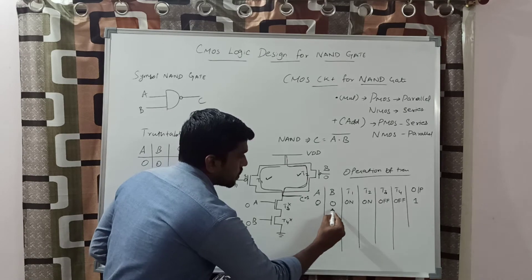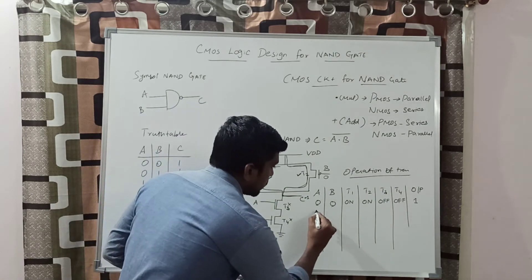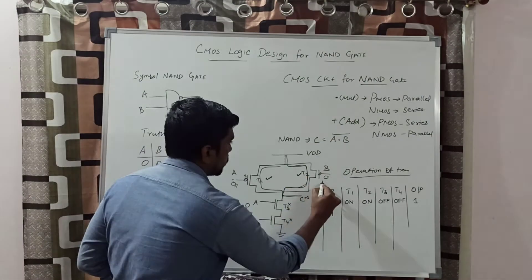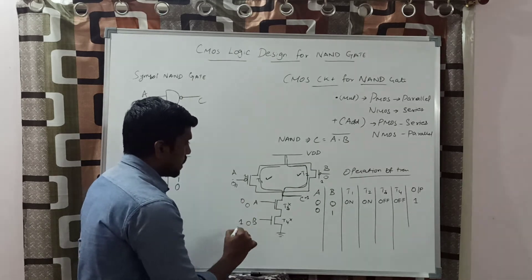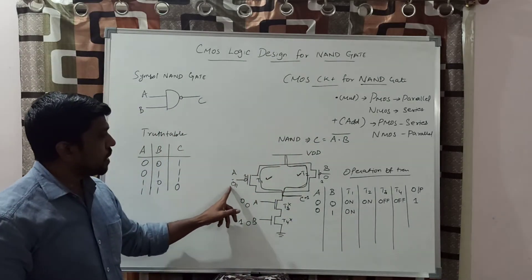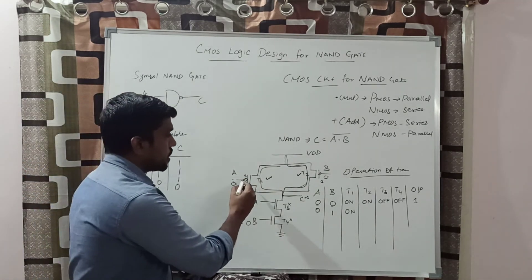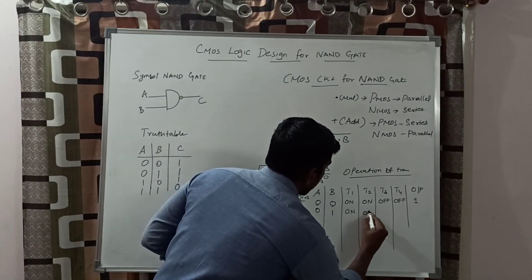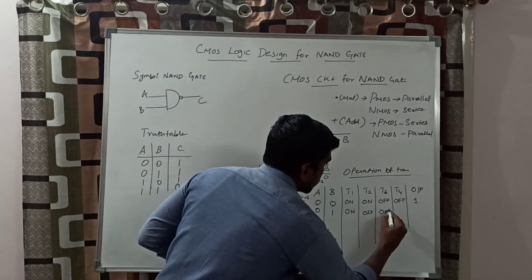This matches the NAND gate property: both inputs low gives output 1. Next condition: A=0, B=1. T1 is on because the 0 value passes through the bubble converting it to 1 internally, turning T1 on. T2 is off. T3's input is 0 so T3 is also off.